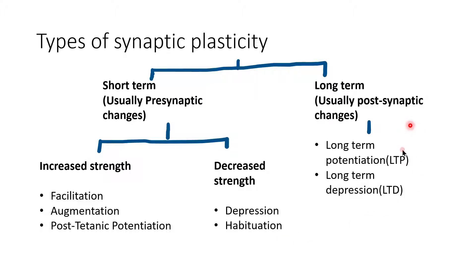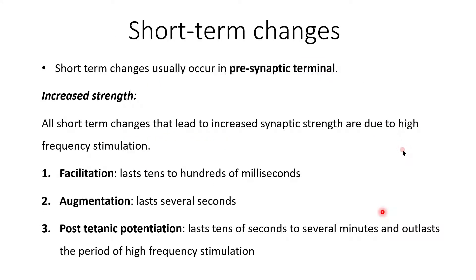Long-term synaptic plasticity happens at the level of the post-synaptic membrane. The examples are long-term potentiation or LTP and long-term depression or LTD. Now moving on to short-term changes, which usually occur at the pre-synaptic terminal as already discussed. All short-term changes that lead to increased synaptic strength are due to high-frequency stimulation, and the examples are facilitation, augmentation, and post-tetanic potentiation.